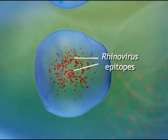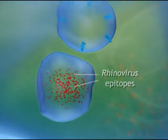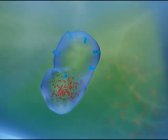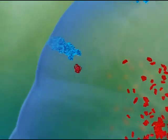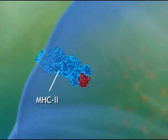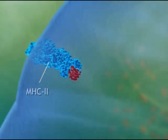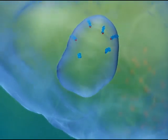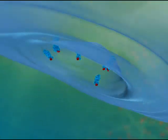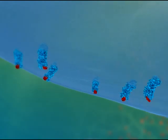The resulting rhinovirus fragments are called epitopes. The dendritic cell then attaches the rhinovirus epitopes to presentation molecules called MHC2. This complex folds outward, so that it sits on the outside of the dendritic cell membrane.